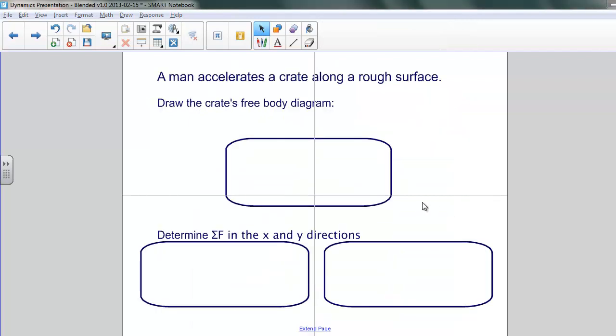Now, let's apply some of what we've learned about free body diagrams and about kinetic friction. So in this example, we're going to consider a man accelerating a crate along a rough surface. The first thing we'll want to do is draw the crate's free body diagram. I'm going to reveal it to you.